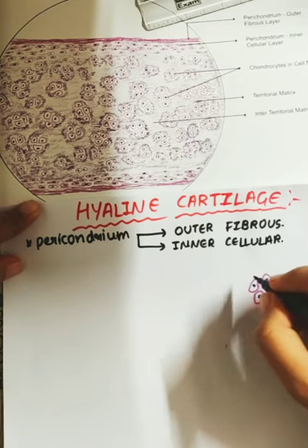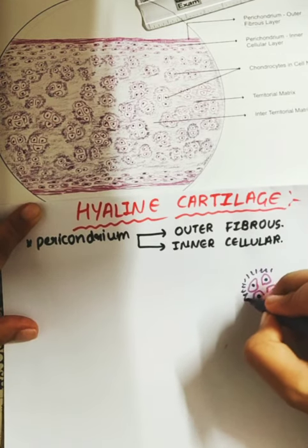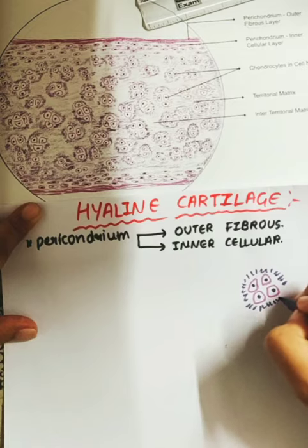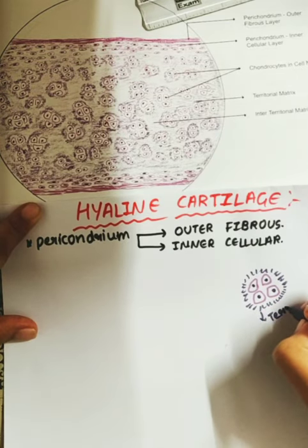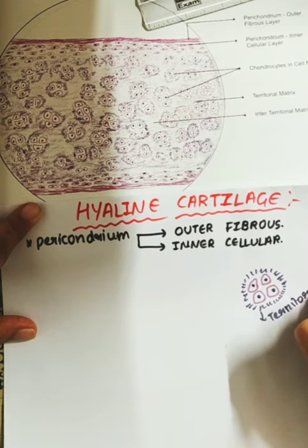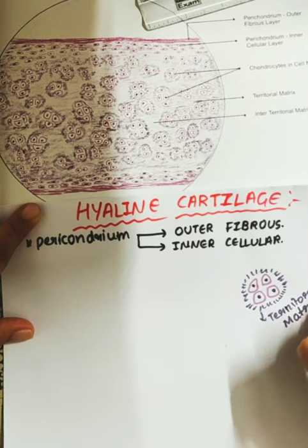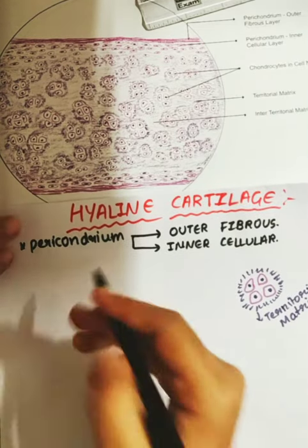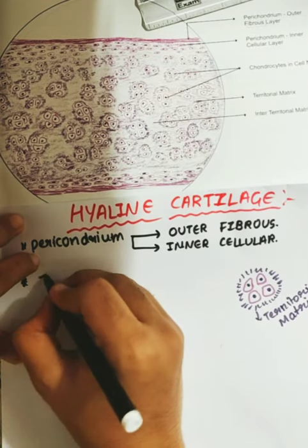These four chondrocyte cells are arranged inside the lacunae and they are surrounded by the territorial matrix. So the chondrocytes are arranged in the lacunae and surrounded by the territorial matrix.